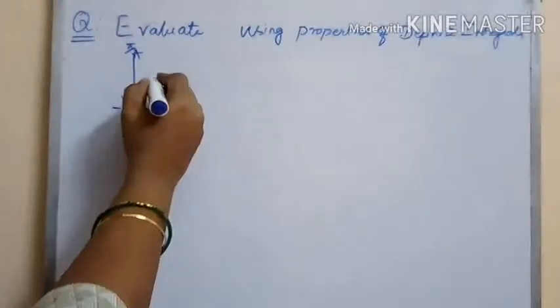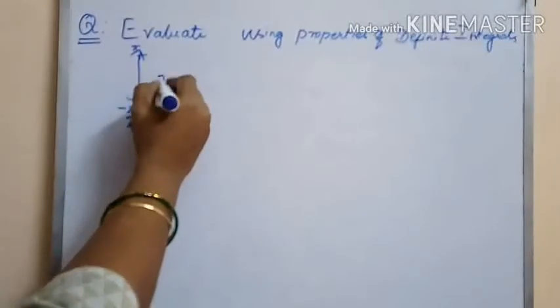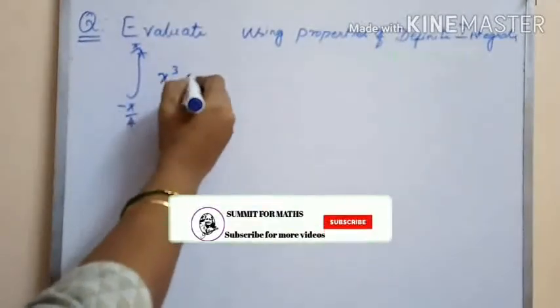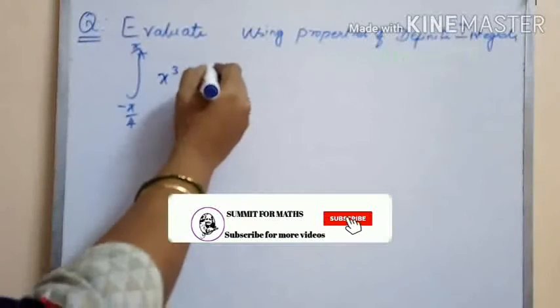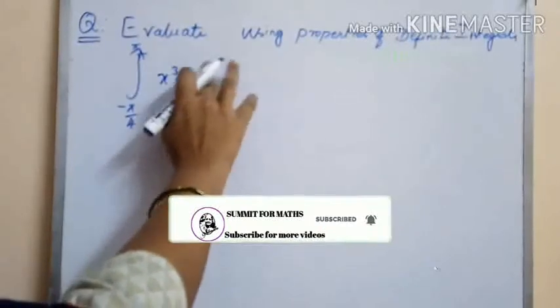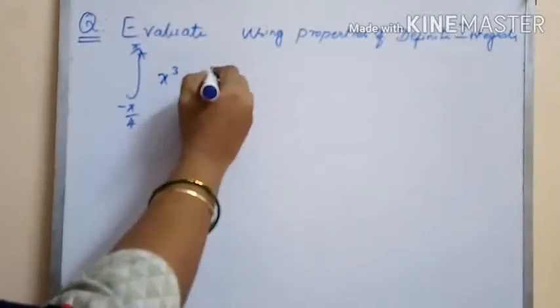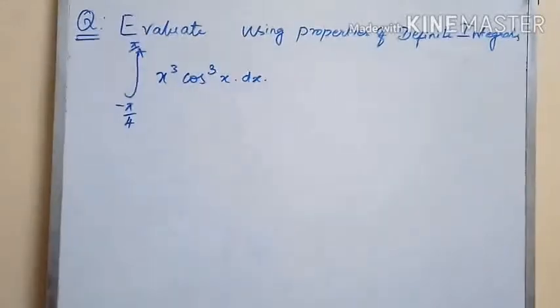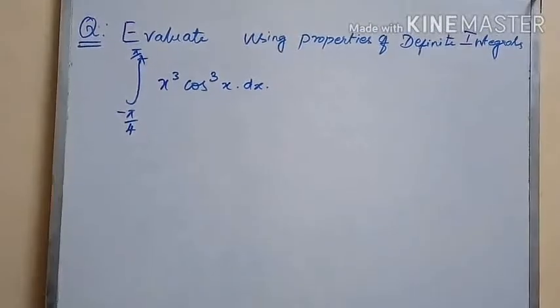Using these properties, let us solve a few problems. Here we are given the integral from minus π/4 to π/4 of x³ cos³(x) dx.